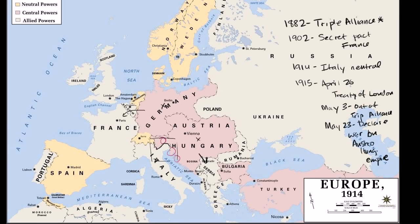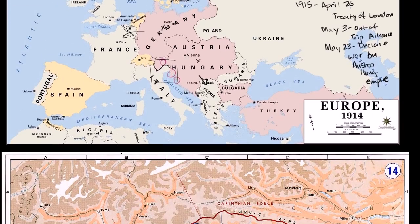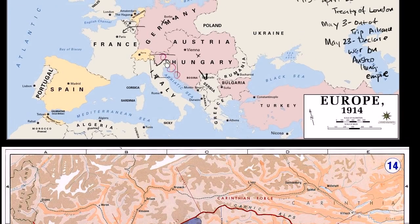In the last video, we saw that despite the fact that Italy was an original member of the Triple Alliance, it was a very awkward relationship. Fast forward to the beginning of World War I: Italy tried to stay neutral, arguing that the Triple Alliance was being on the offense as opposed to the defense. In early 1915, in the spring of 1915, it signs the secret Treaty of London with the Allies. Then in May, it actually declares war on Austria-Hungary. It actually wouldn't formally declare war on Germany until 1916. That lays the setting for the actual combat along the Italian-Austro-Hungarian border.